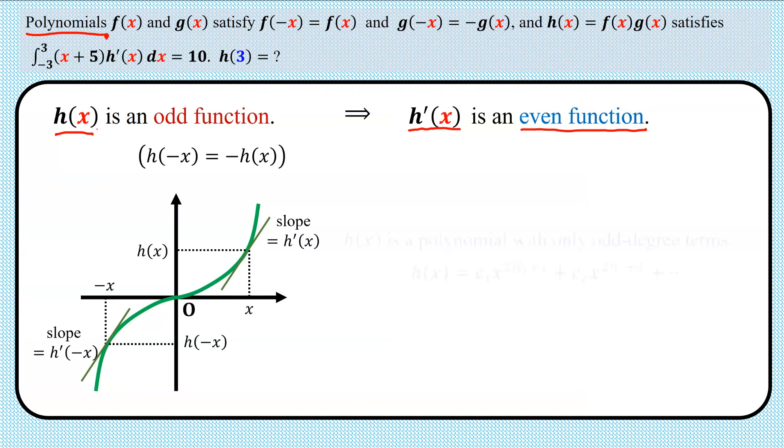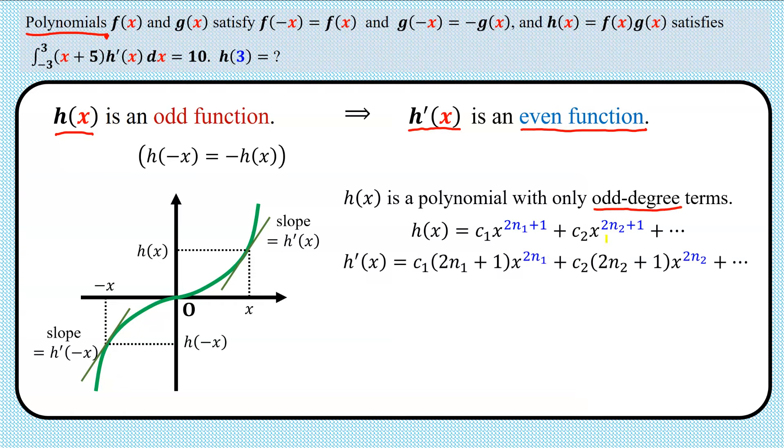This means that h(x) is also a polynomial, and since it is an odd function, h(x) only contains odd degree terms. We know that if we differentiate odd degree terms, we obtain even degree terms, hence h'(x) must be an even function.